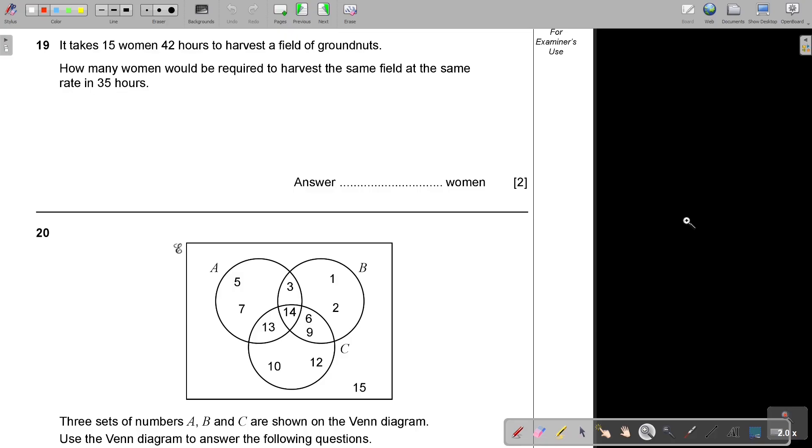It's very important that you underline: 15 women, 42 hours. How many women would be required to harvest the same field at the same rate in 35 hours? So be very careful.